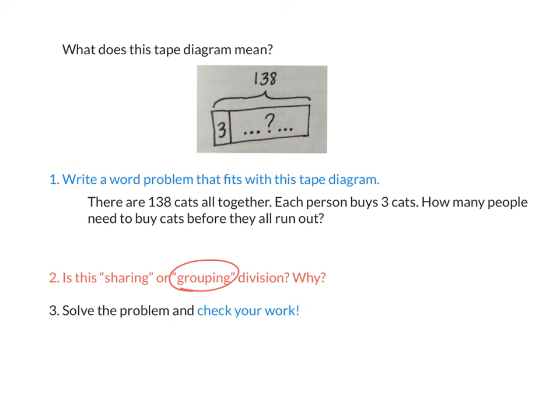This is a grouping problem because we know that how the cats are being shared. Harutu gets three, Swarunima gets three, Sanvi gets three, Anshil gets three, everyone gets three cats. Each person gets three cats. We know how it's being shared. We're finding out how many people or how many groups of three cats there need to be. So now we solve the problem. What's our whole? 138, divided by three. Have we divided by three before? But as Avani noticed, that divisor has a different meaning now. Before it was, we have three groups all together, how many are in each group. Now we know that each group has three and we want to find out how many groups of three there are.